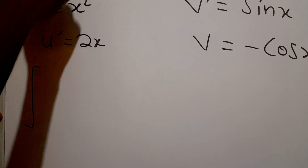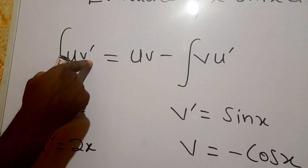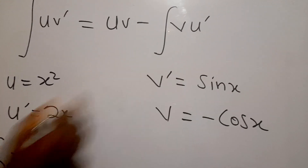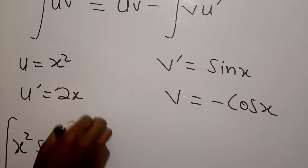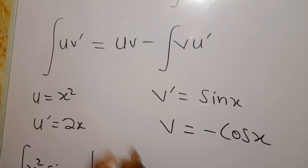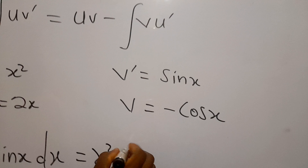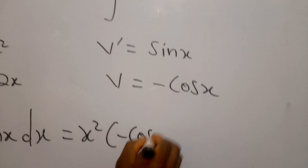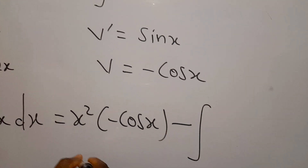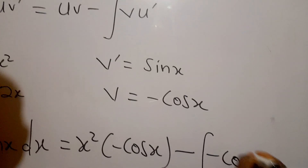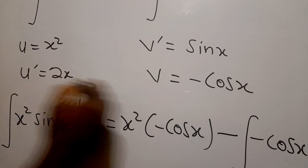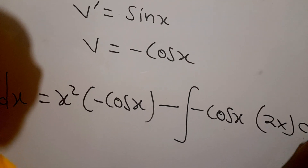So the integral of u v prime — our u is x squared and our v prime is sine x — becomes, using u is x squared and v is negative cos x: x squared times negative cos x, then minus the integral of v which is negative cos x times u prime which is 2x, dx.